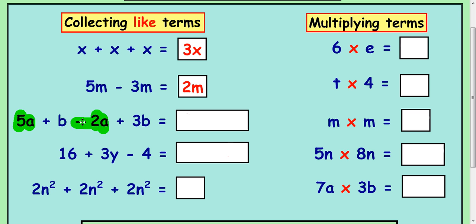So in the case of the a's, we've got a 5a and we've got a take away 2a. This take away is associated with the 2a here. So we've got 5 take away 2, which makes 3a's. And if you look at the b's, we've got a plus b and a plus 3b, that makes 4b's. It's not plus 4b.